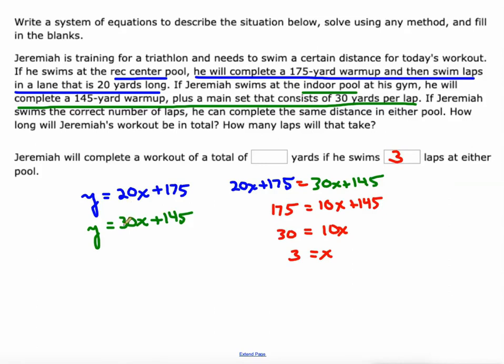And if we want to figure out the distance for each, or the total distance, we can just take either one of these equations and plug that 3 in for the number of laps, X. So I'll plug it into this bottom equation, and 30 times 3 is 90, and 90 plus 145 is 235. So 235 is his total yards. All right, so we set up this linear system, and then we solve it using substitution.